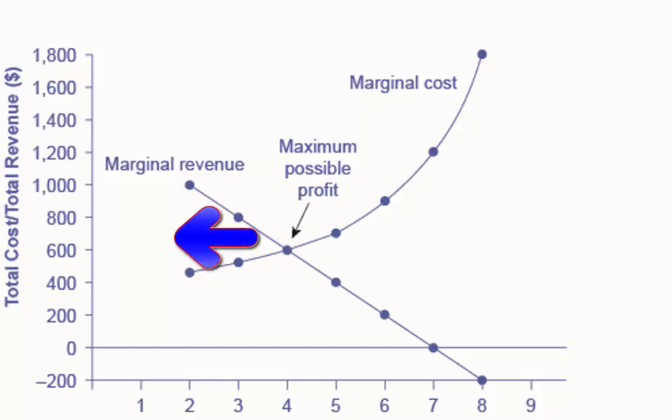If the monopoly produces a lower quantity, then marginal revenue is greater than marginal cost at those levels of output, and the firm can make higher profits by expanding output. If the firm produces at a greater quantity, then marginal cost exceeds marginal revenue, and the firm can make higher profits by reducing its quantity of output. Note, this is how the output level is determined, but extra steps are needed to determine the price and ultimately the profit.